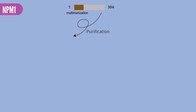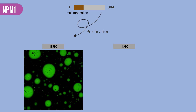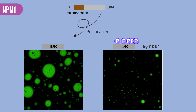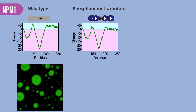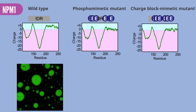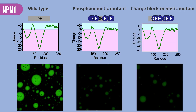We observed the opposite effect of phosphorylation in NPM1. The non-phosphorylated form of NPM1 is strongly phase-separated, and this is diminished by CDK1 phosphorylation. The phosphomimetic mutant, as well as the charge-block mimetic mutant, also had reduced propensity for LLPS compared to the wild type.